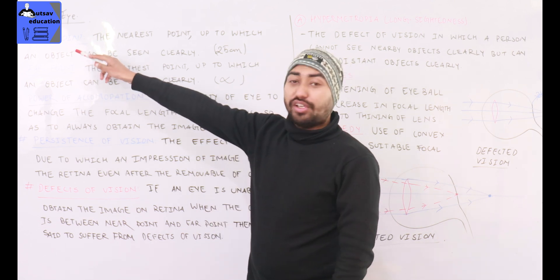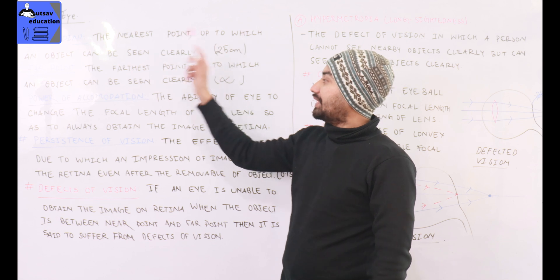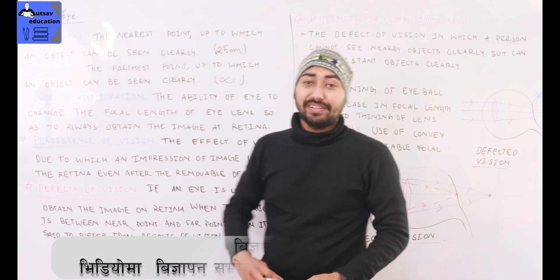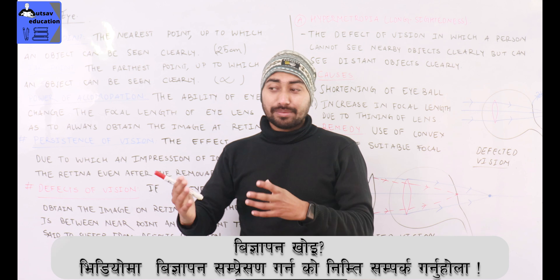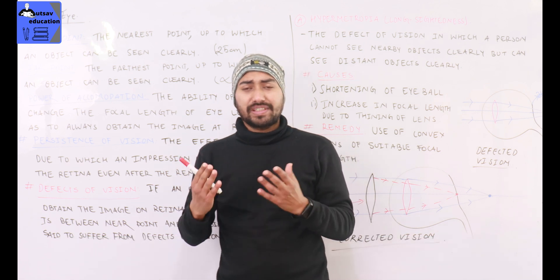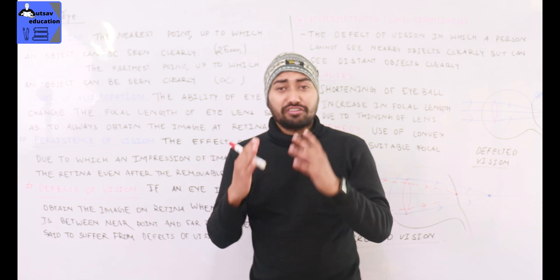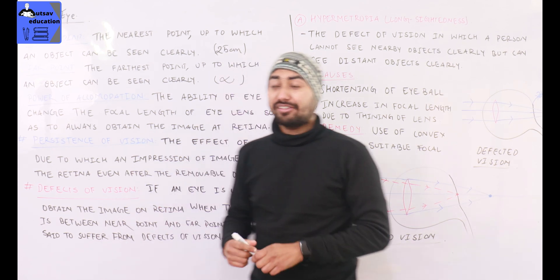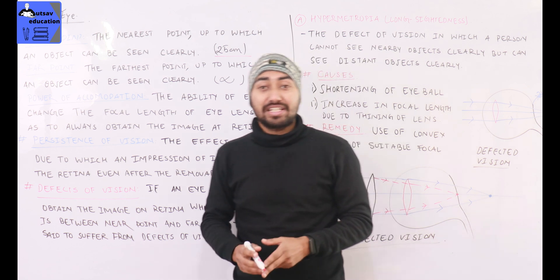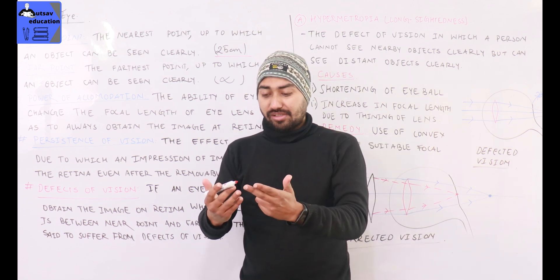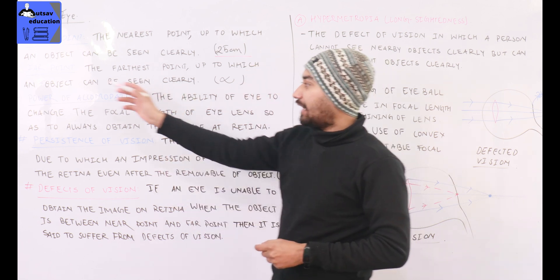First, I will explain the near point. What is the near point? The nearest point up to which an object can be seen clearly by the eye. The near point of a normal eye is 25 centimeters. From this near point, we can focus on to the far point.